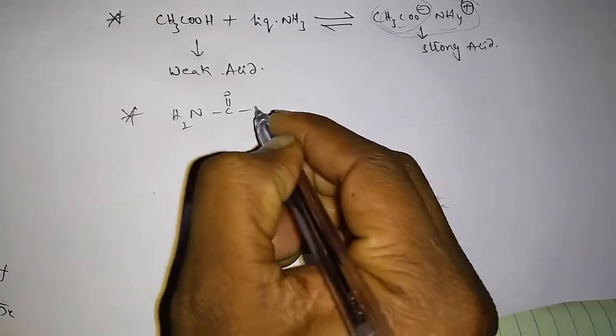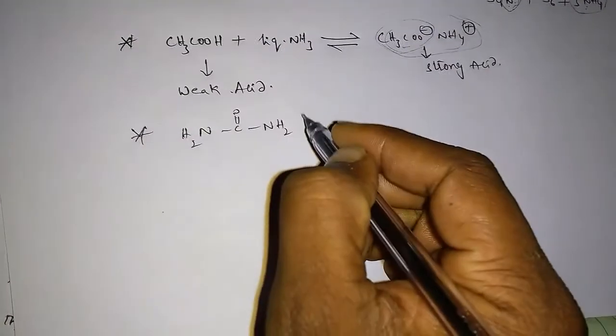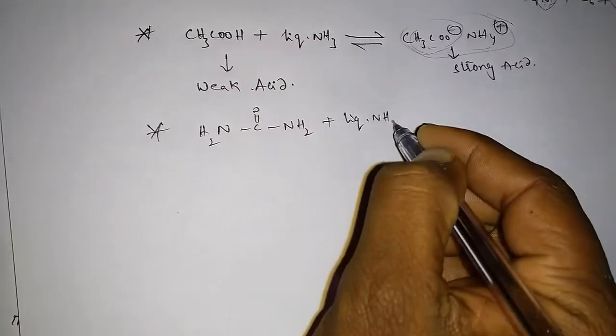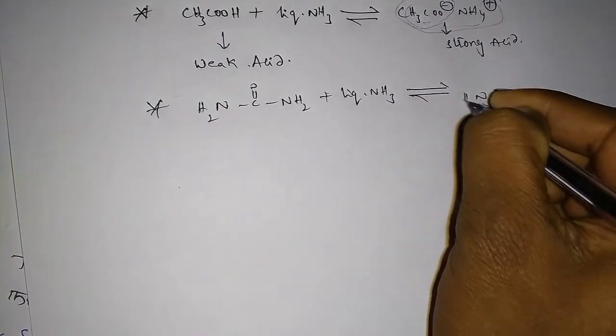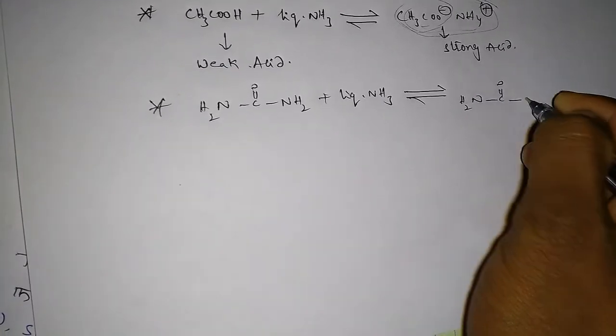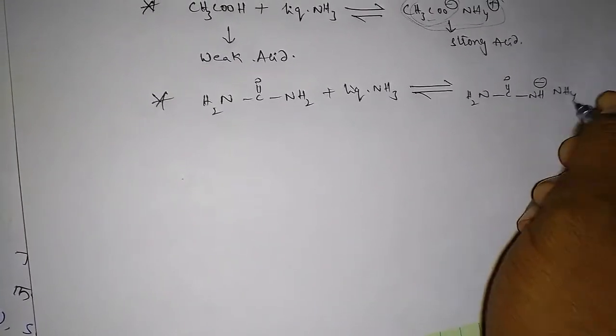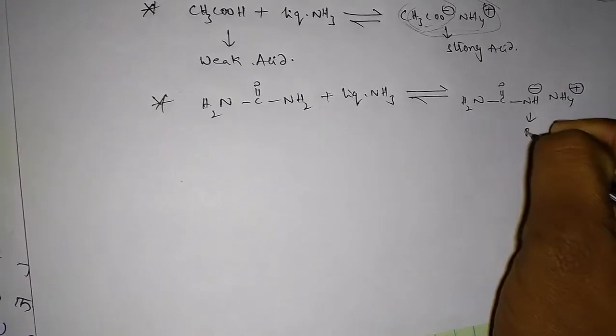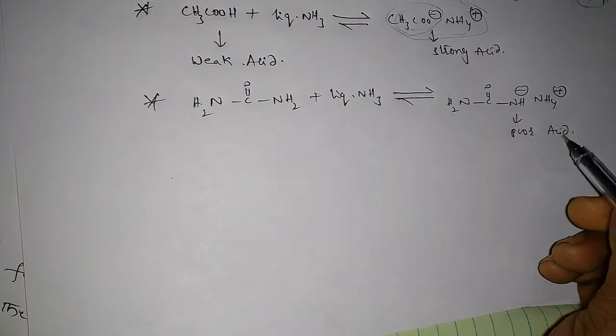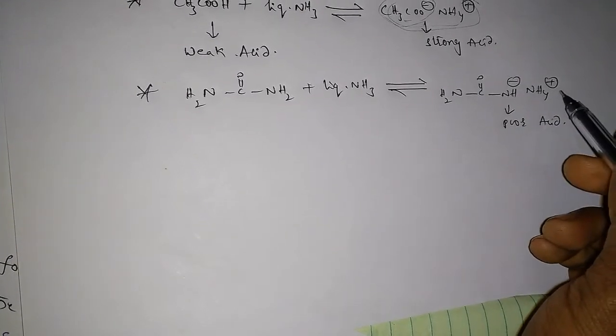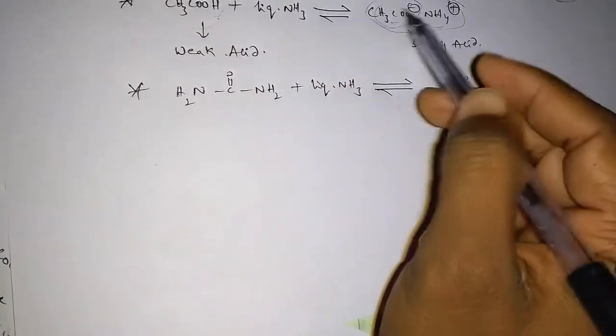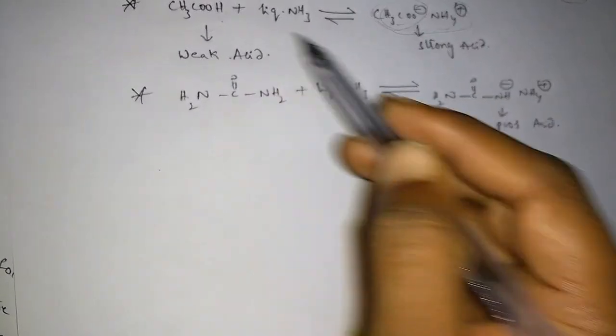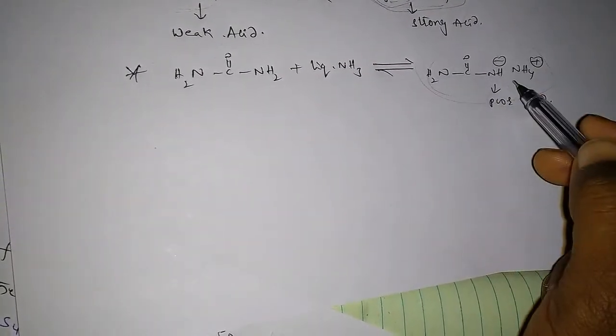Next, reaction of urea with liquid ammonia forms weak acid. So this is poor acid or simply weak acid. It donates H+ ions slowly. Here, this acetic acid donates H+ ions slowly, but this is faster. That's why it is strong acid and it is weak acid. So this ionic complex acts as poor acid.